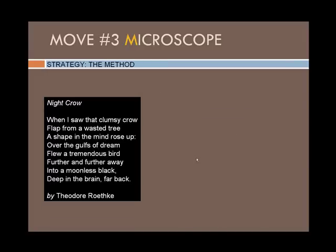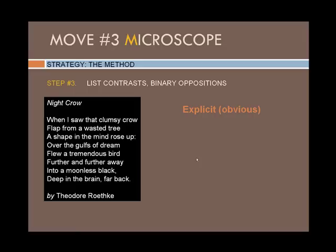Now that we've noticed some repetitions and similarities, let's list the contrasts, or things that are in binary opposition to one another. Look first for explicit contrasts, or ones that are pretty obvious. Here are a few possibilities.